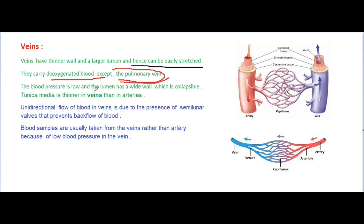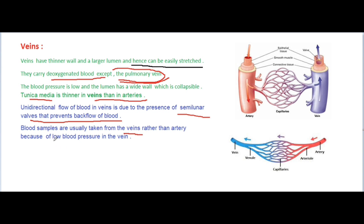In veins, blood pressure is low and the lumen has a wide, collapsible wall. Tunica media is thinner in veins than in arteries. Unidirectional flow of blood in veins is due to the presence of semilunar valves that prevent backflow of blood. Blood samples are usually taken from veins rather than arteries because of the low blood pressure in veins.